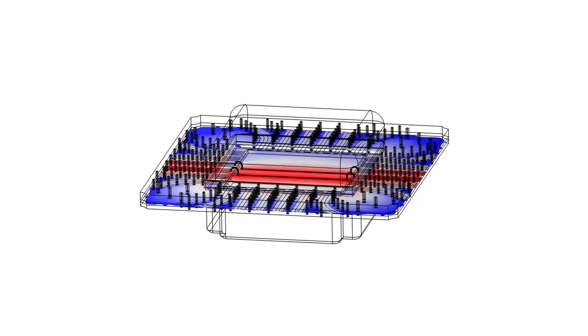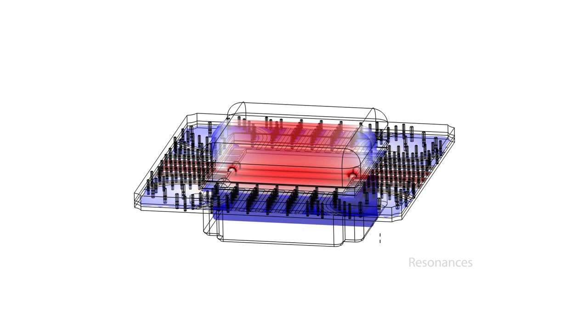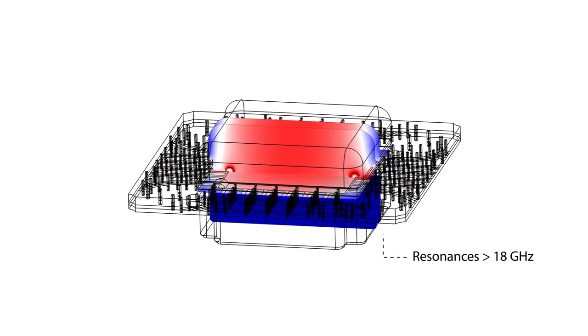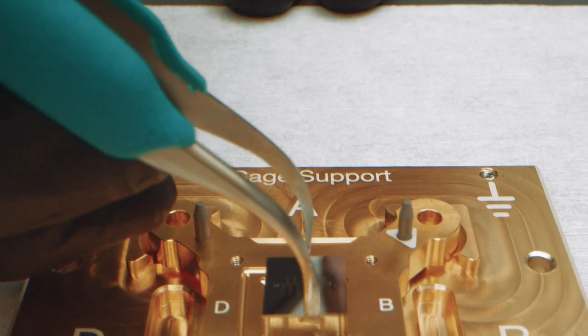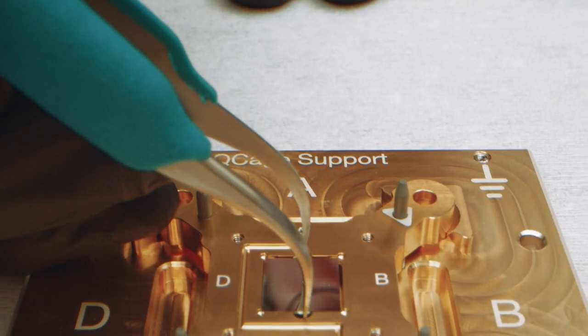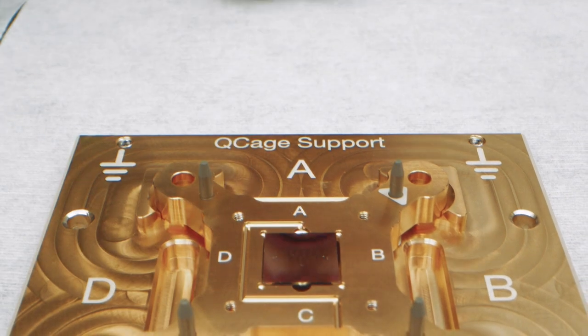It has the chip placed in a cavity, carefully engineered via electromagnetic simulation, to have all resonances above 18 GHz. The Qcage is designed to hold the chip suspended inside a microwave cavity,